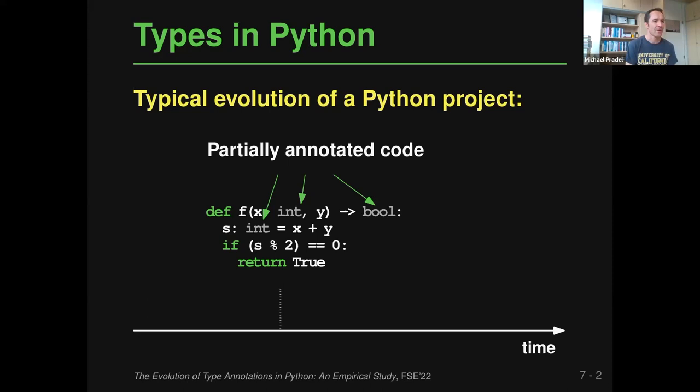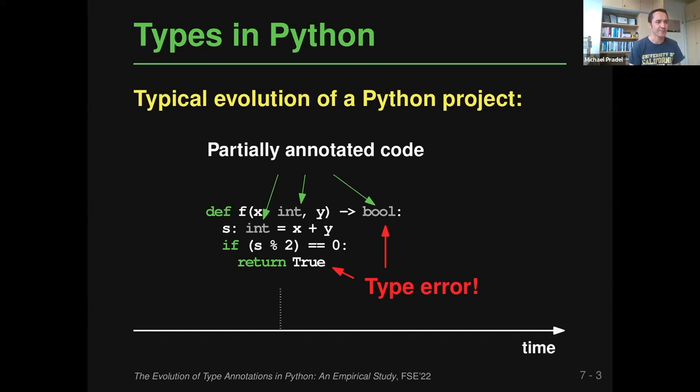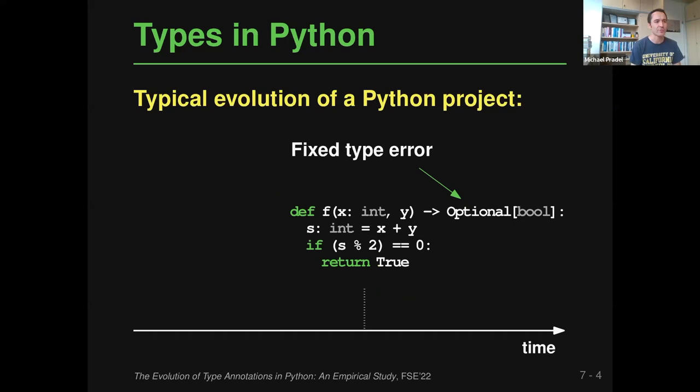When you add type annotations to existing code, one thing that might happen is that you get them wrong. In the example shown, there's a type error: this function is annotated to return a Boolean, and it does return a Boolean on one path, but not on another. So what should be annotated is that it returns either a Boolean or None. The fix is replacing the Boolean return type annotation with Optional of Boolean.